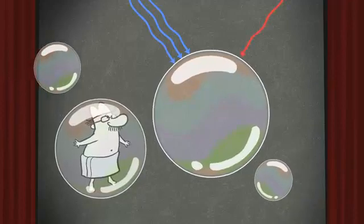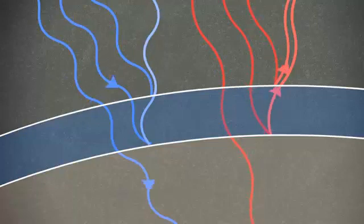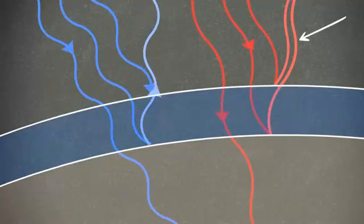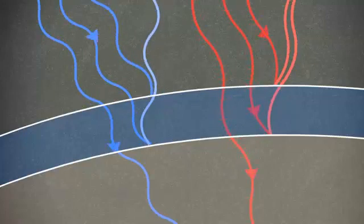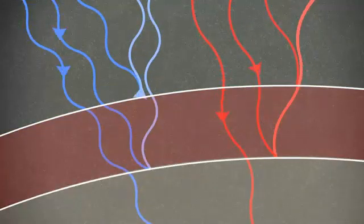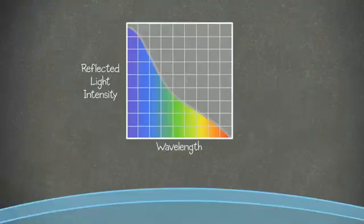Now, suppose a red light wave is hitting the same part of the bubble. Because red light waves are longer, the portions that reflect off the top and bottom surfaces do not line up. They cancel each other out and do not create a very strong red reflection. However, if the bubble was thicker, then the red light waves would line up and the blue light waves would cancel each other out, making the bubble appear red.